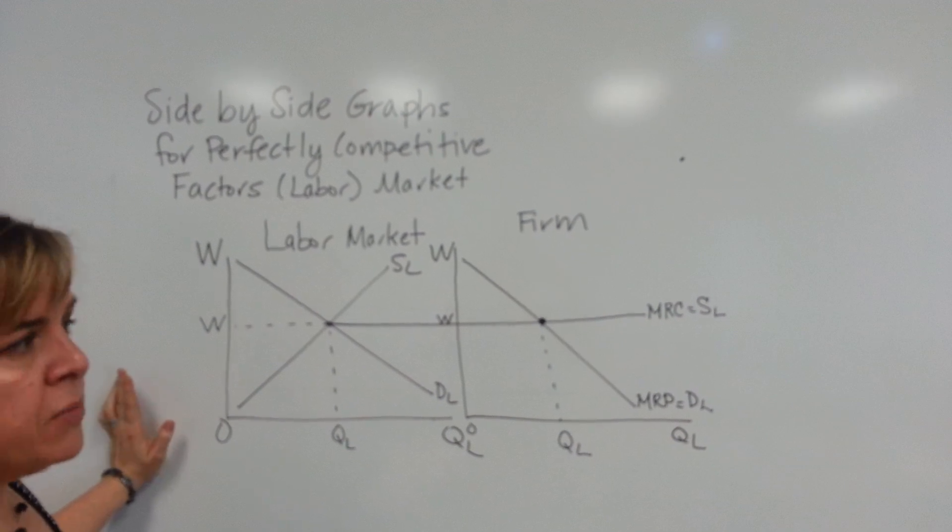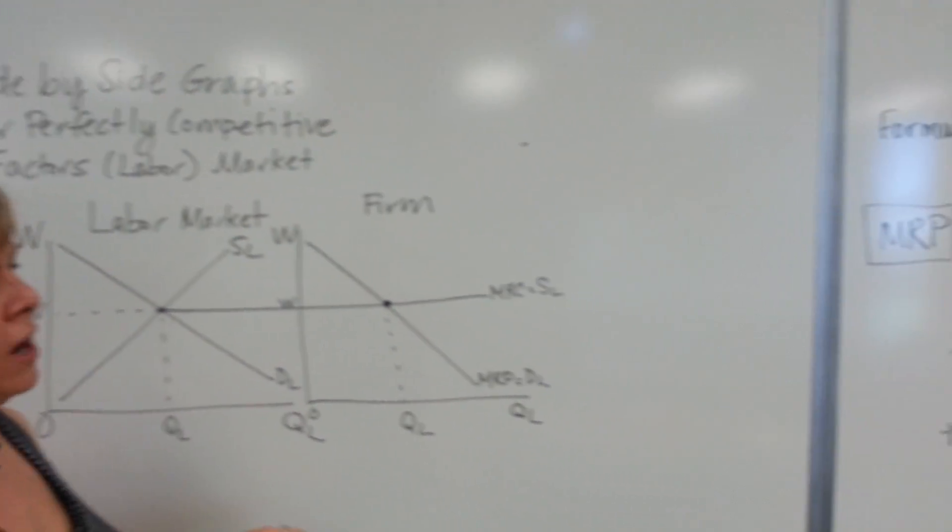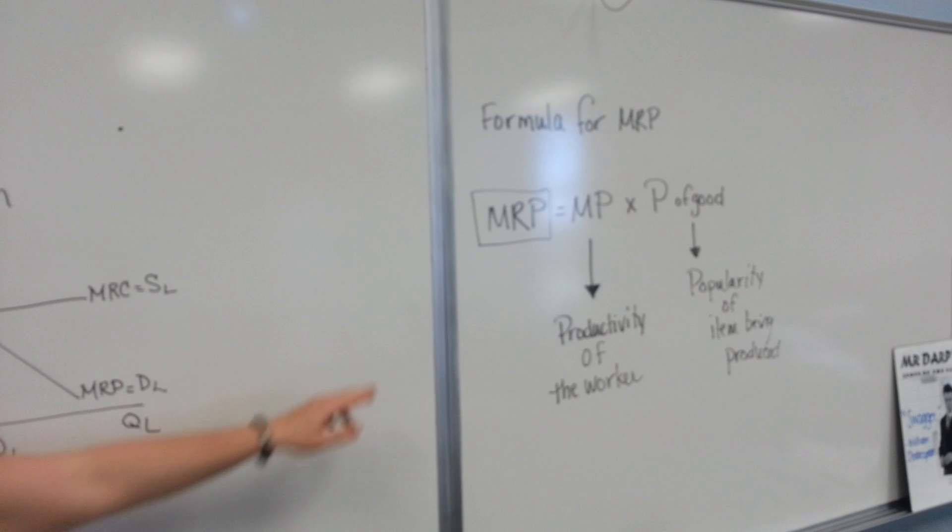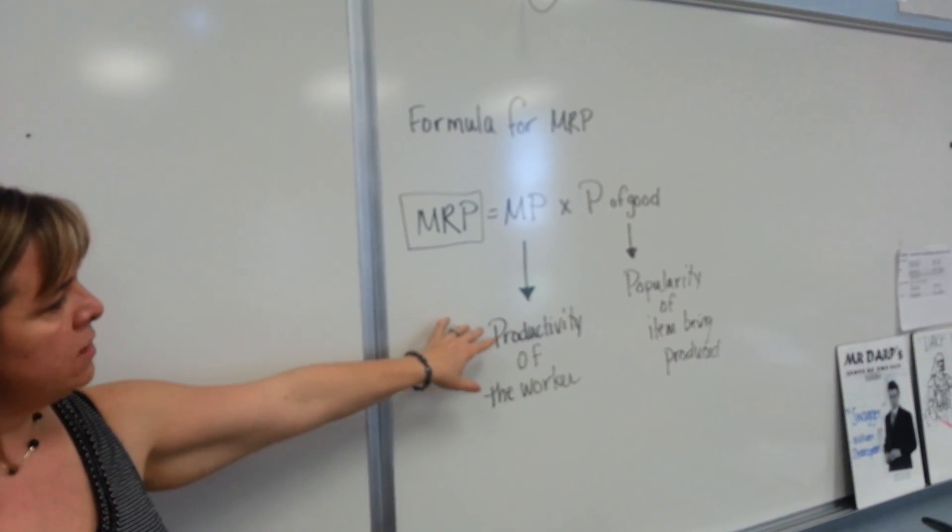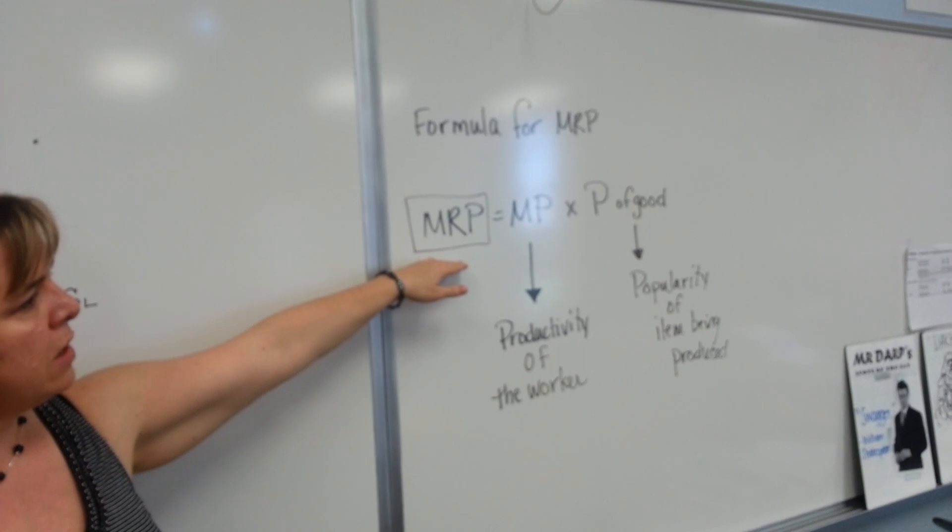Now, if you remember, the formula for MRP is marginal product times the price of the good. So anything that changes the worker's productivity or the popularity of the item being produced changes our MRP, and we're going to be able to see these changes on our graph.